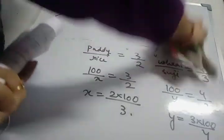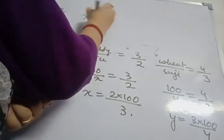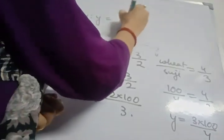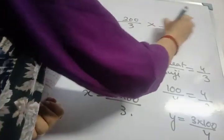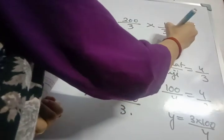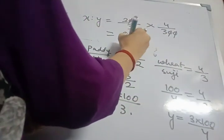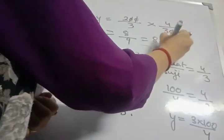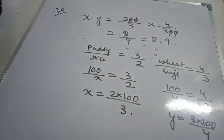So what do we get? X and y ratio. That means rice and suji ratio. So 200 by 3 into 4 by 300. So 8 by 9 which is equal to 8 is to 9. This is the ratio of rice and suji. Okay.